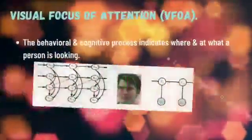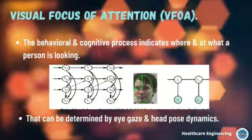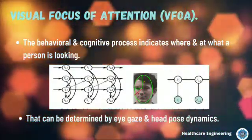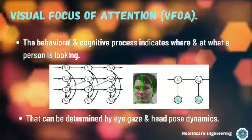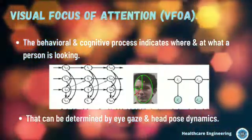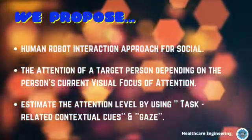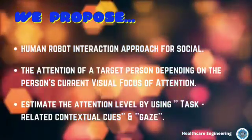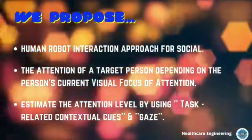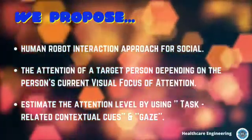The visual focus of attention is the behavioral and cognitive process that indicates where and at what a person is looking, and that can be determined by eye gaze and head pose dynamics. However, predicting the focus of attention remains a challenge because it changes rapidly. So we propose a human-robot interaction approach for social robots that attracts and controls the attention of a target person depending on the person's current visual focus of attention. This system detects the current attention of the person and estimates the level by using task-related contextual eyes and gaze patterns.